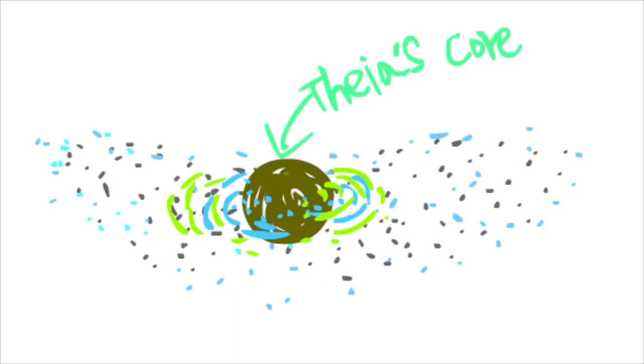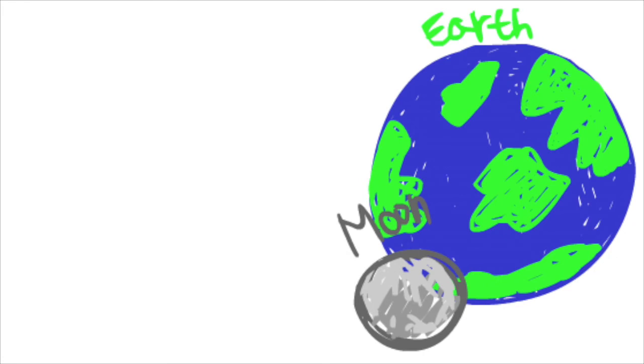the gravity gathered the lighter element particles from the crust near the undestroyed Theia's core. Then it formed the moon and centered near Earth's ecliptic plane, where the moon orbits today.